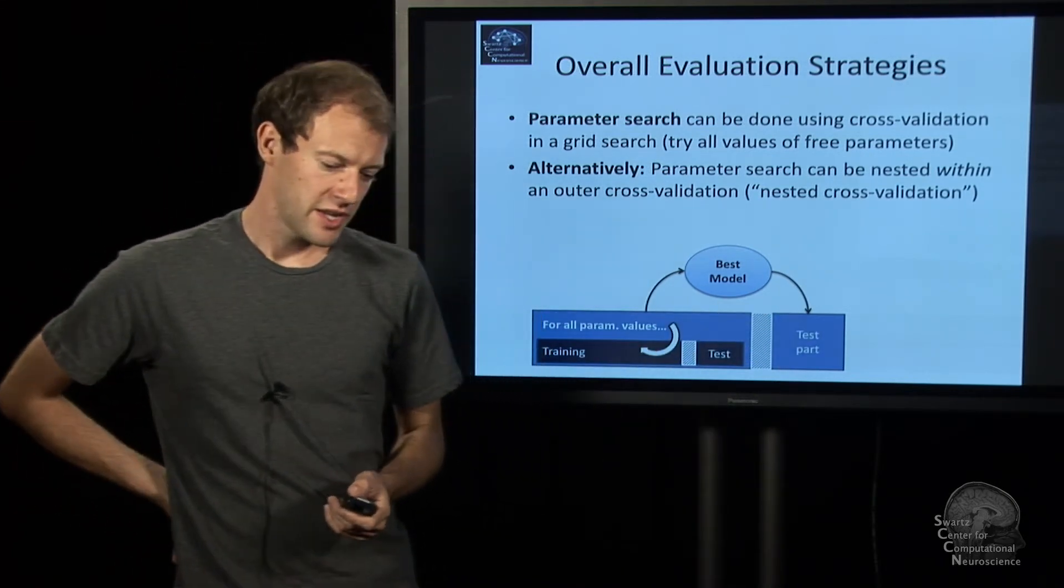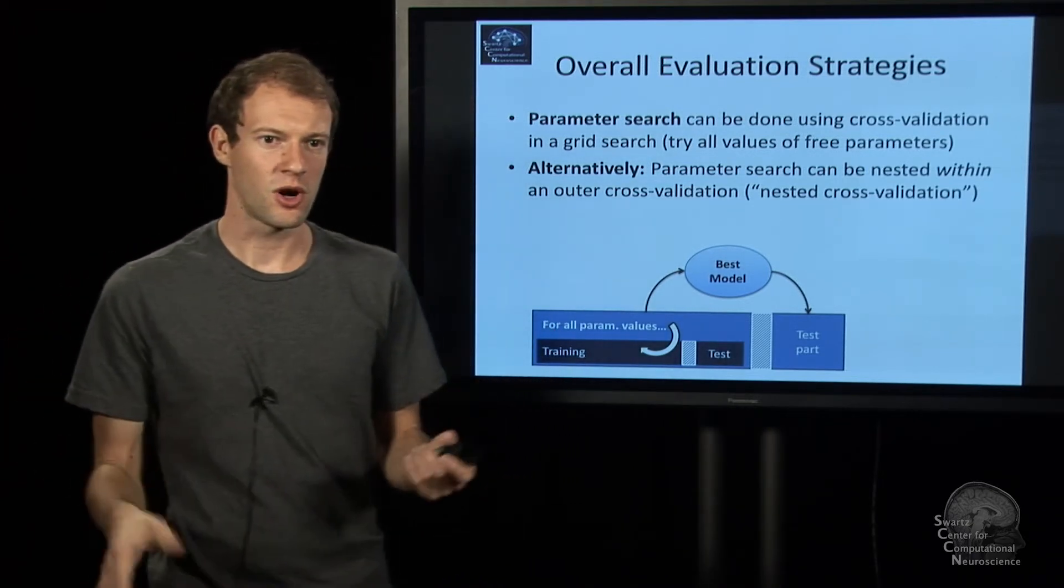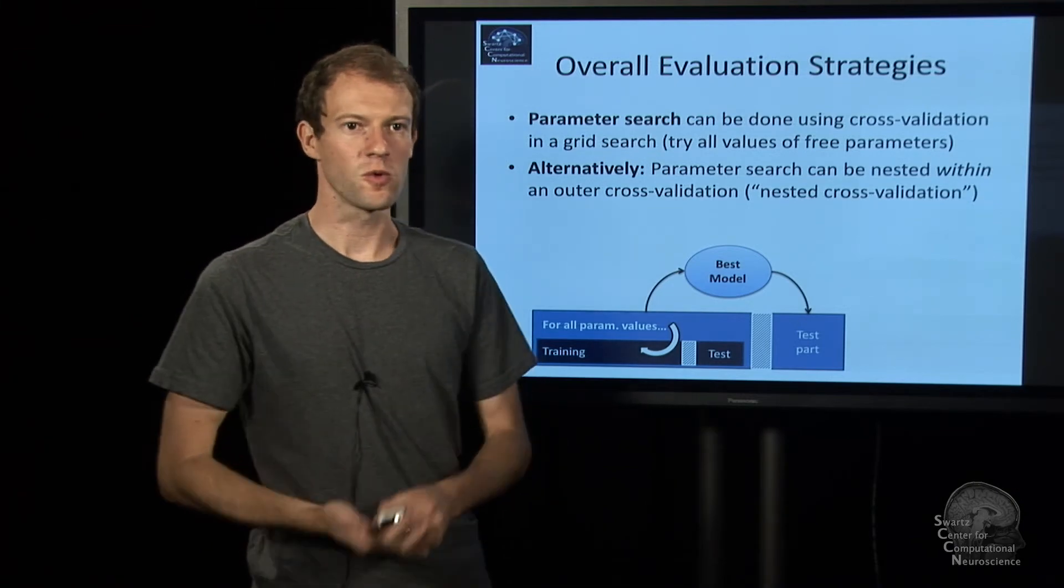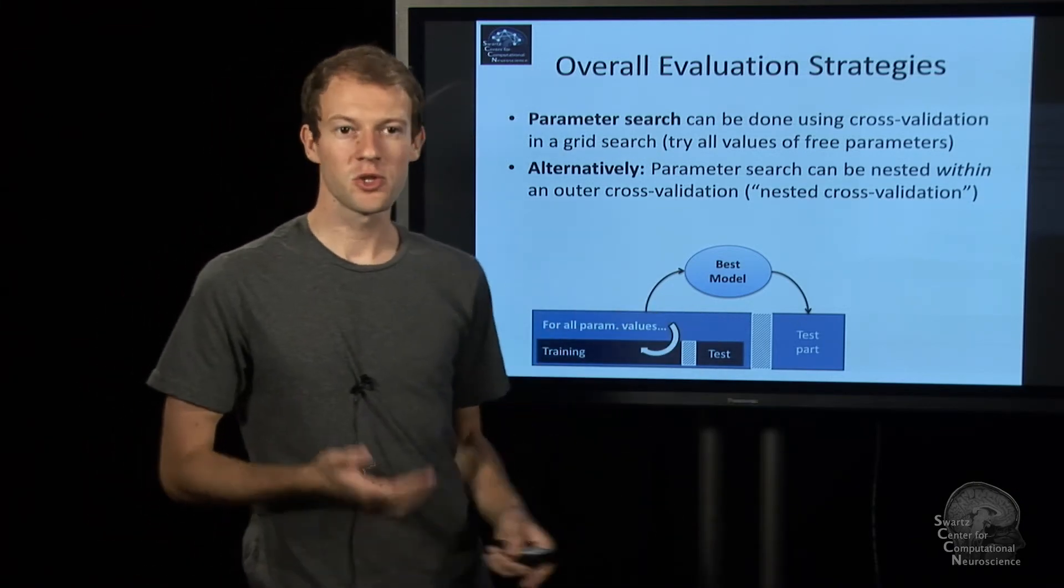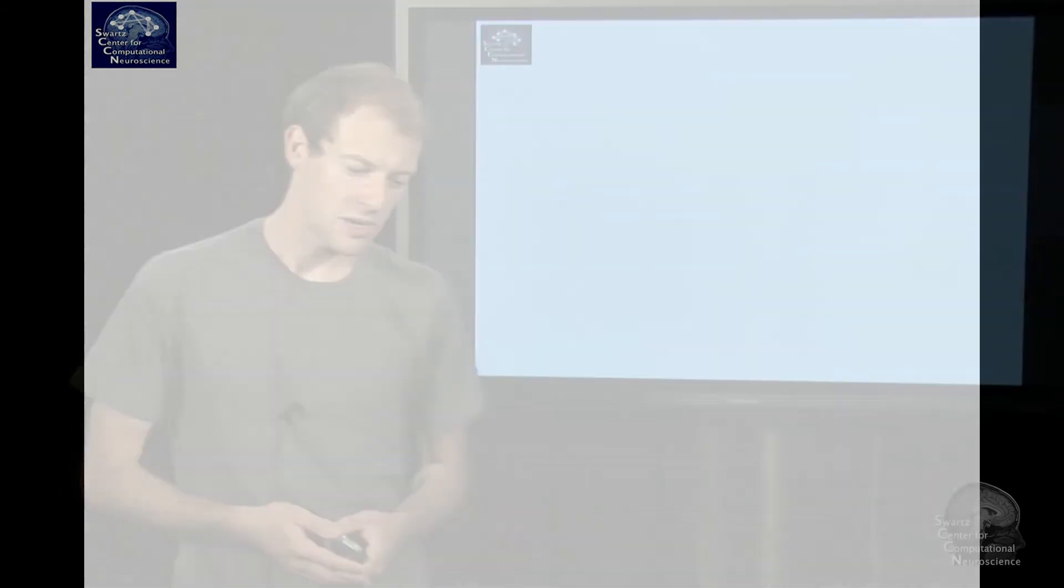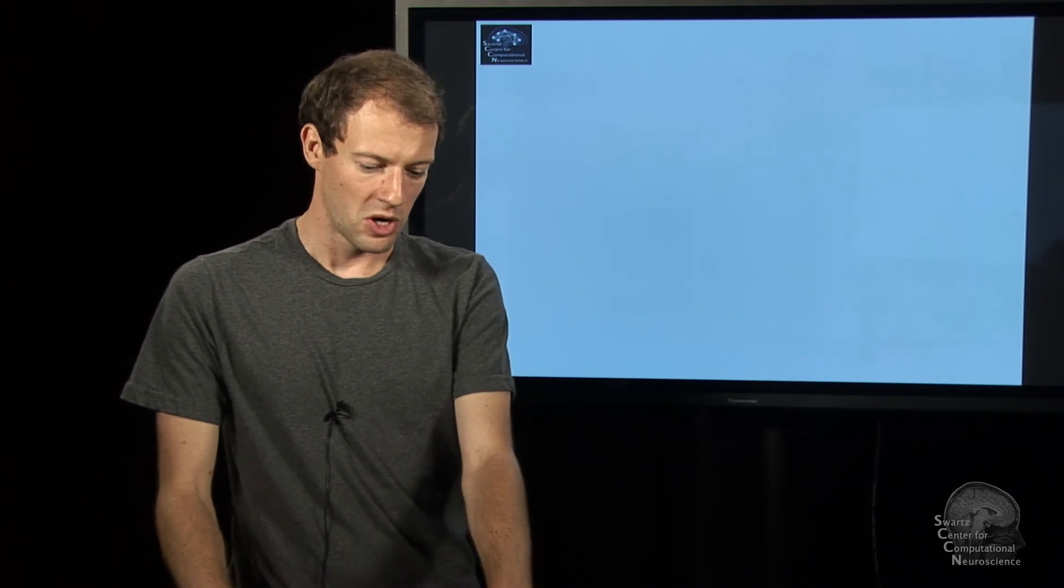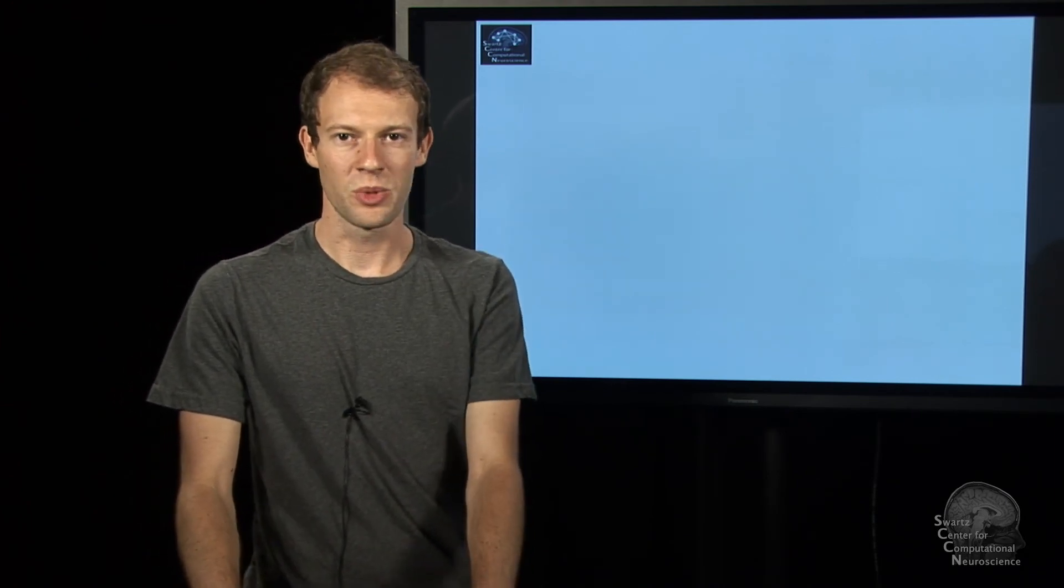And that is a general strategy if you have BCI models which have free parameters that you need to optimize, but you still want to be able to quantify how well they work. The only trouble is that this is pretty slow, because you might do the same calculation five times in here, times five times in the other cross-validation times however many values you have. So you easily run it 200 or 1,000 times. And that is already the most sophisticated evaluation technique that's out there. And that takes us to the end of this module.